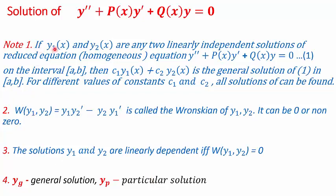If y1(x) and y2(x) are any two linearly independent solutions of this homogeneous differential equation y'' + p(x)y' + q(x)y = 0 on the interval (a, b), then the linear combination c1·y1 + c2·y2 will be the general solution of this differential equation in the interval (a, b). For different values of the constants c1 and c2, we can find all the solutions.